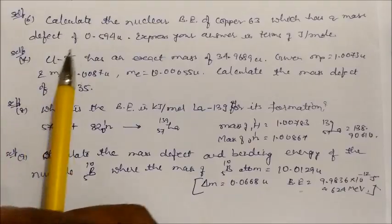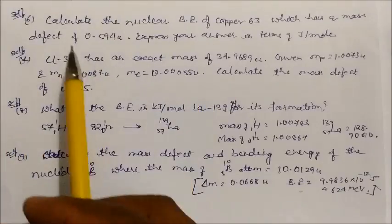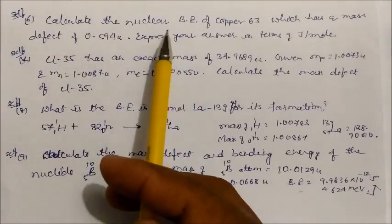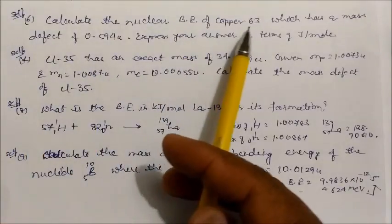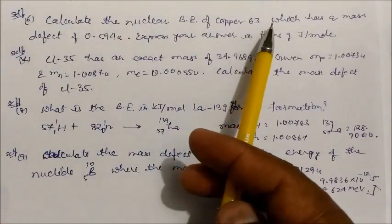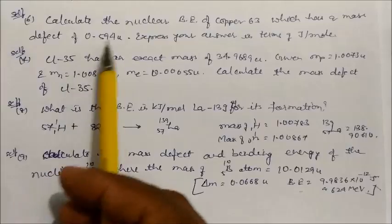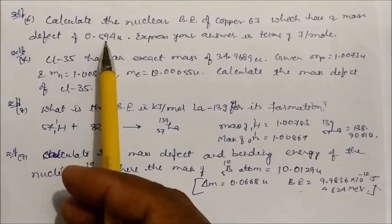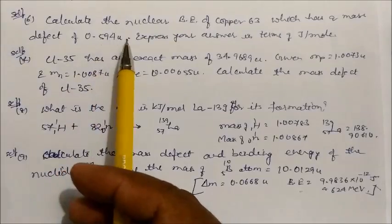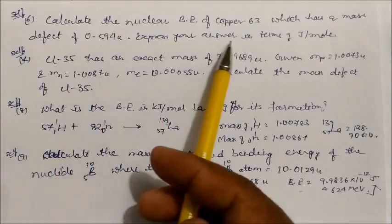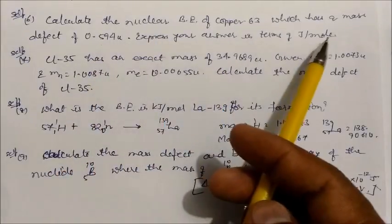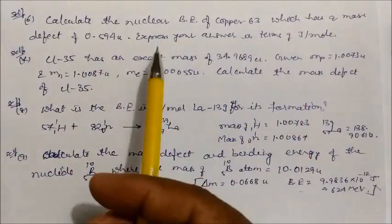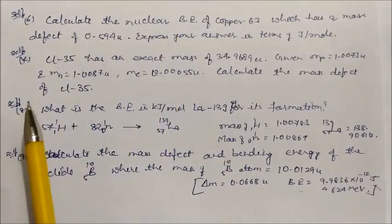This question you can practice by yourself: calculate the nuclear binding energy of copper-63 which has a mass defect of 0.59 u; express your answer in joules per mole. It is solved using the same method as the previous question.